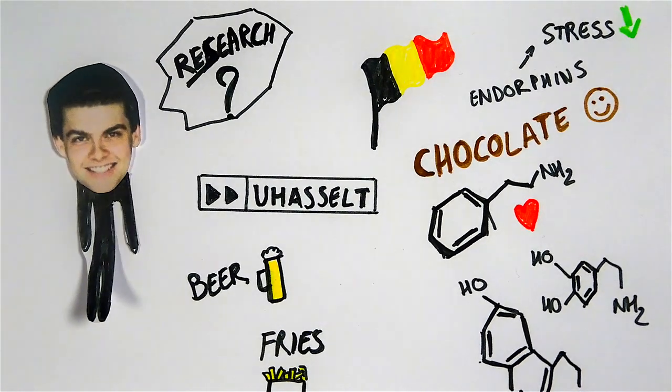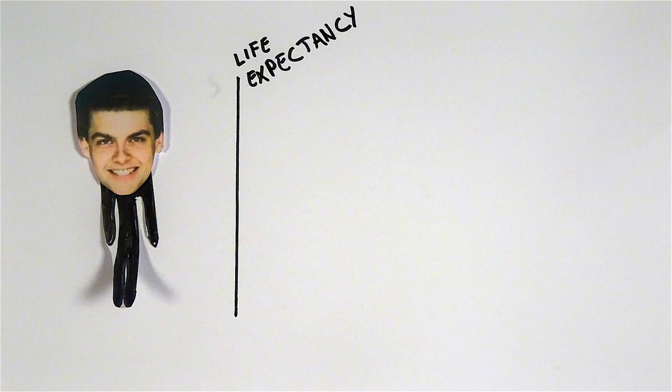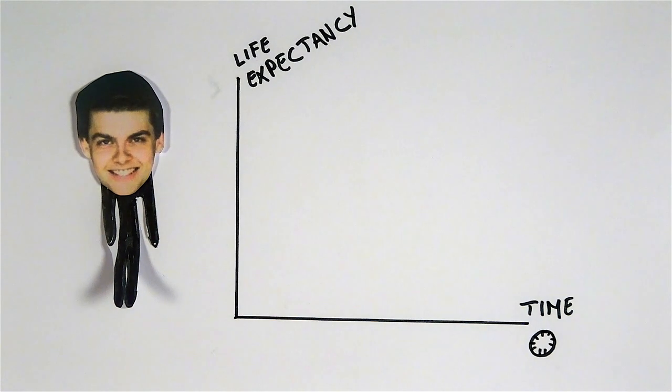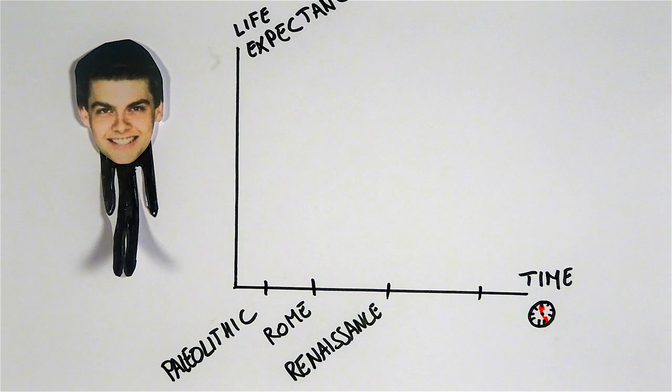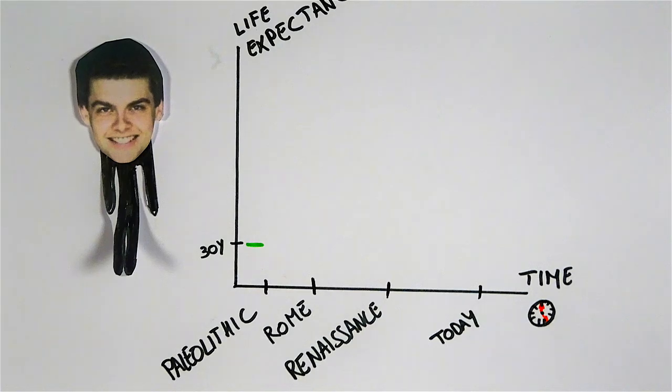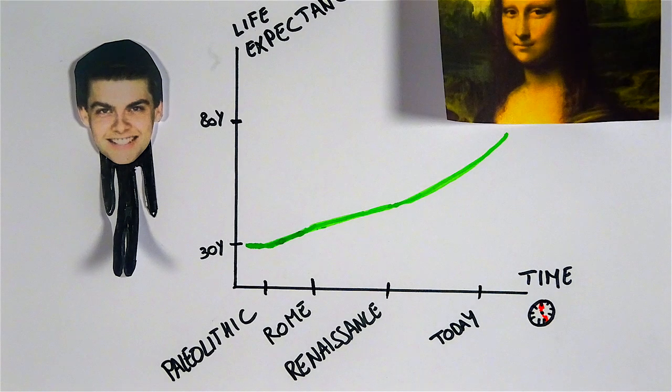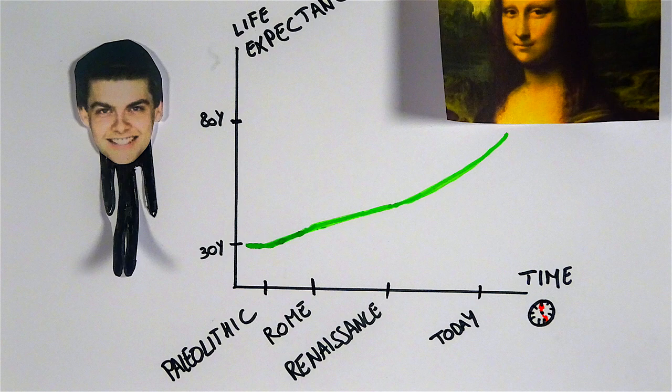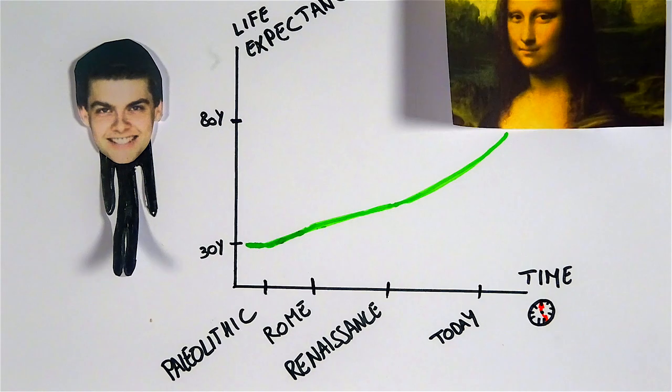So what is my research actually about? Well, when we take a look at the maximum life expectancy of a human being through the evolution of time, we see the following. In the beginning as a caveman, we could only reach the age of 30 years. But through medical revolutions, we now reach the staggering amount of 80 years.